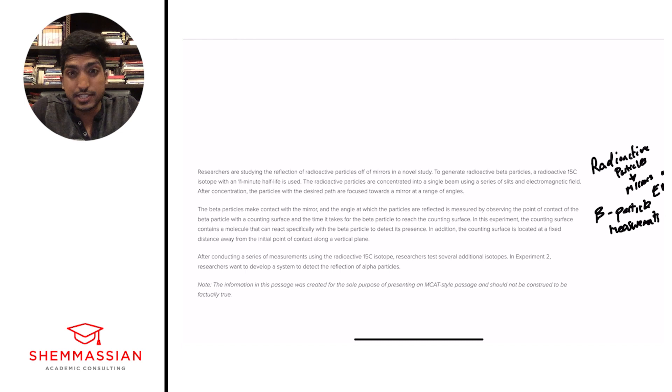That's the big picture understanding. I haven't seen most of these terms in my content review or my practice questions. We've maybe seen beta particles because that's nuclear chemistry, but we haven't seen all these other things like counting surfaces or a fixed distance away from a vertical plane. Like these types of things that haven't come up in our exact content phase. And so if we look at this paragraph, we just identify it as beta particle measurements. We can come back if we need to, but if not, let's just go right in the next paragraph.